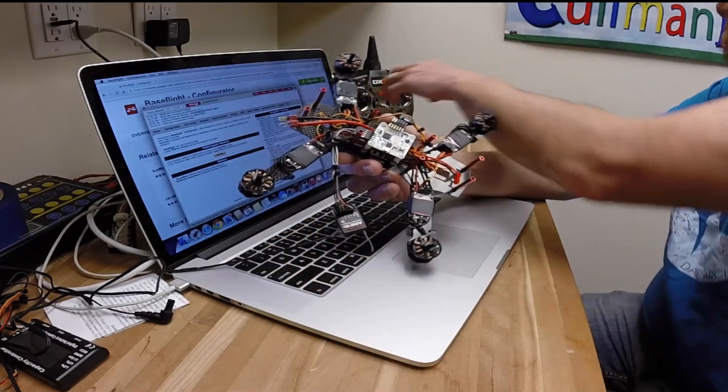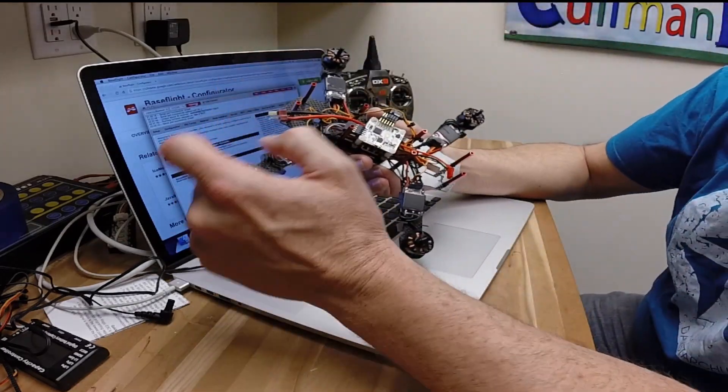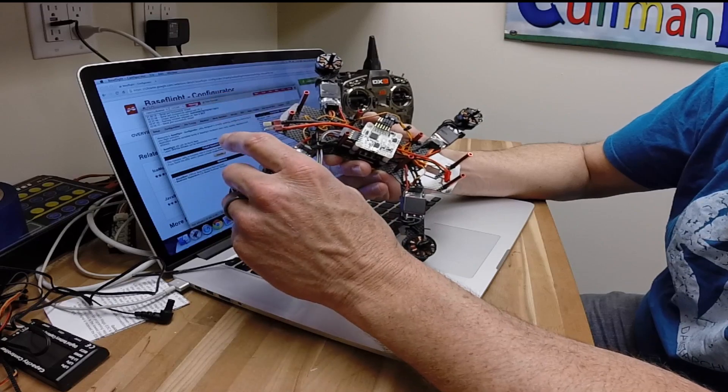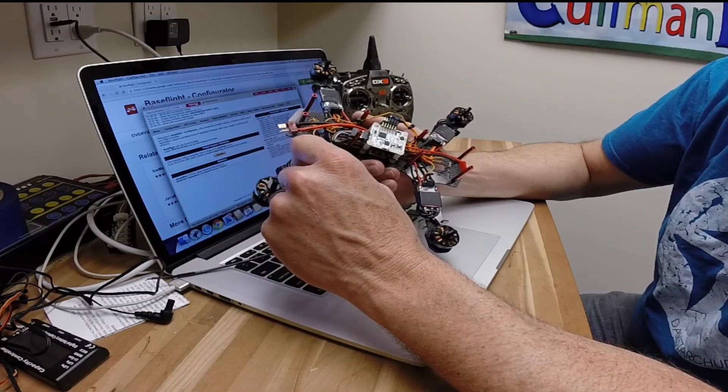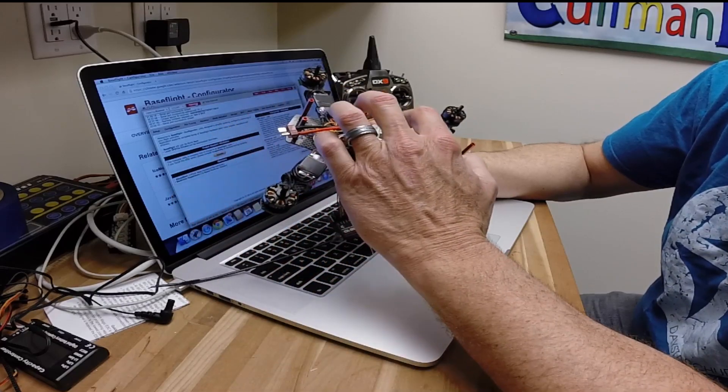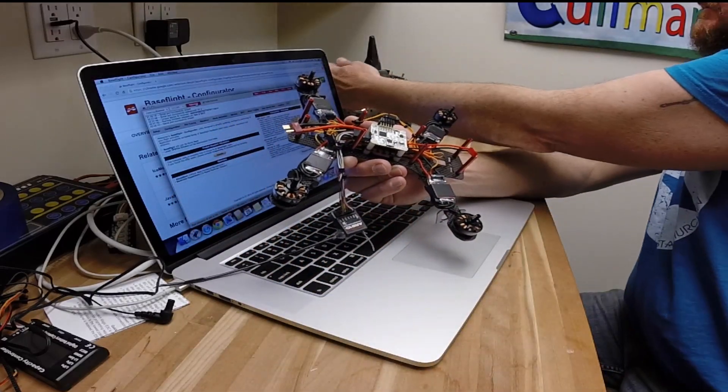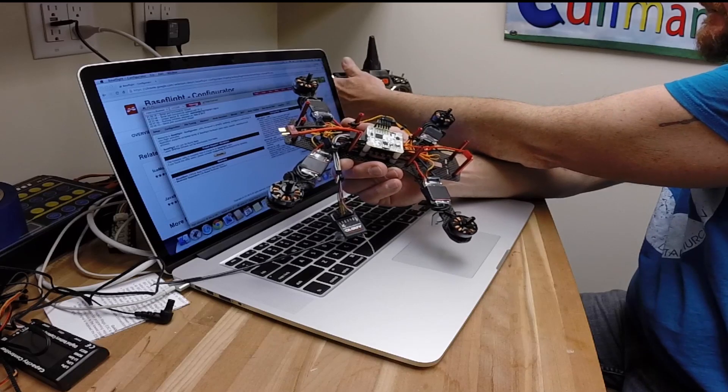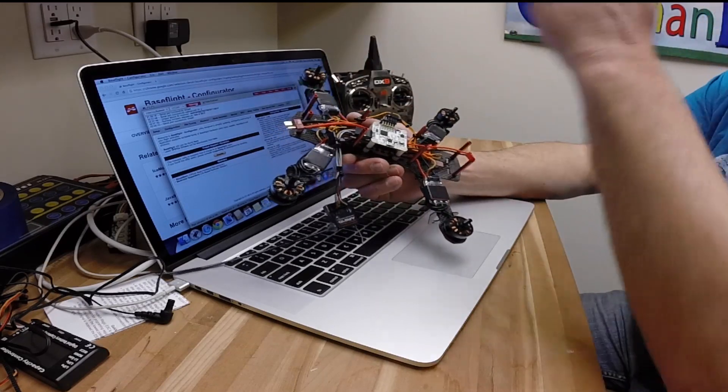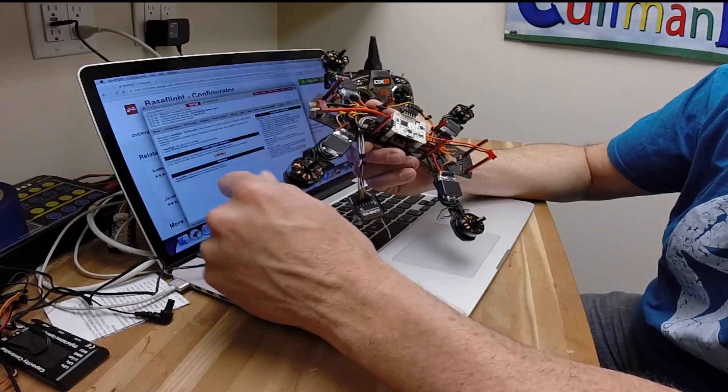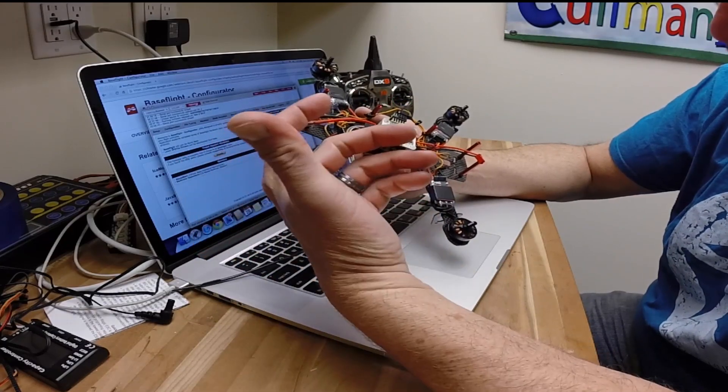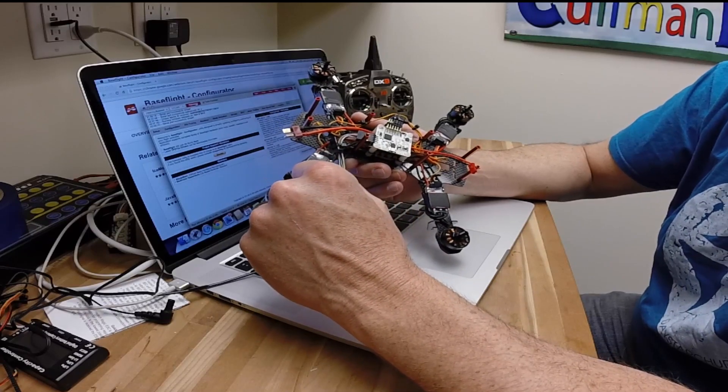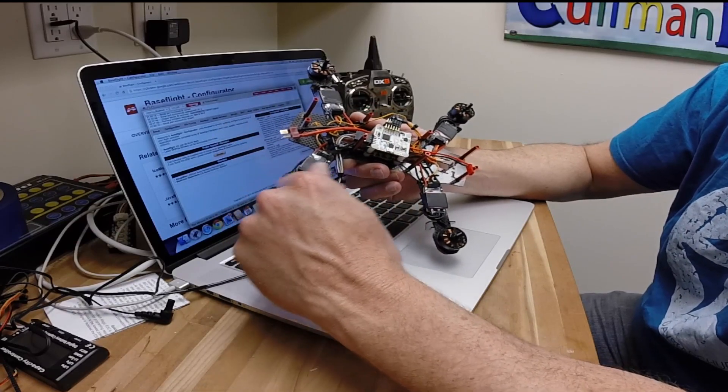We're going to go into the Base Flight a little more. We're going to show you some setups. We're going to show you how to go to your auxiliary channels on your radio, and you can set up horizon mode, acro mode, and rate mode, which will give you some different performance in your mini after you've established flying it and get comfortable with it. So this concludes part 3. I hope you've enjoyed it.